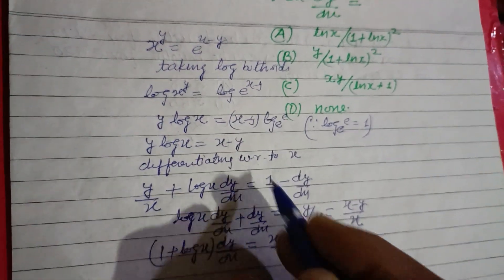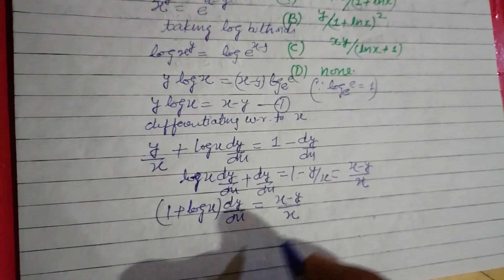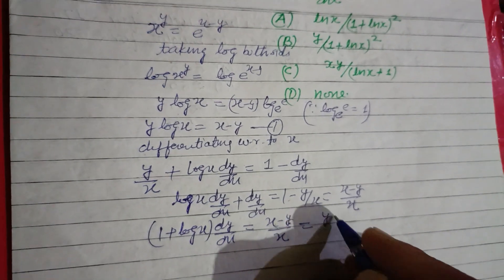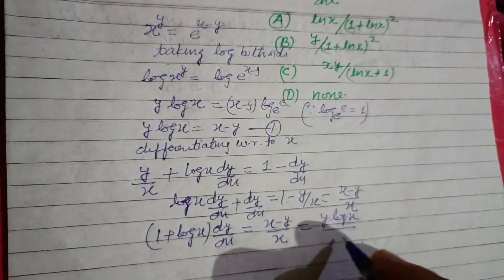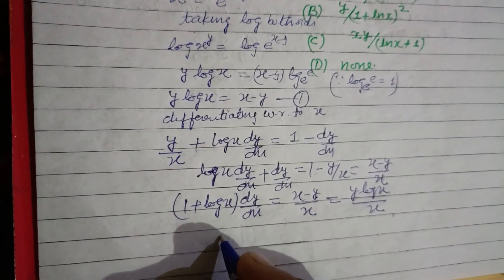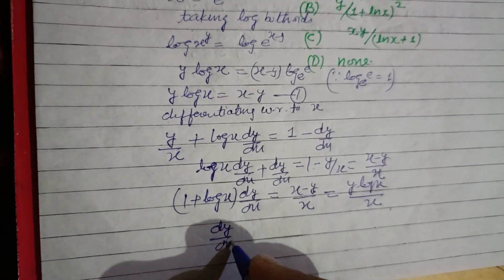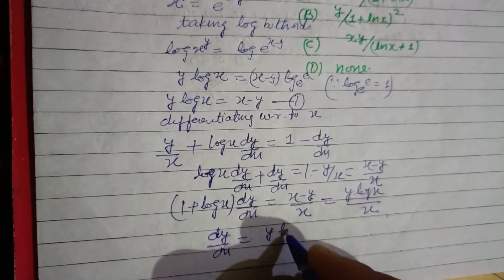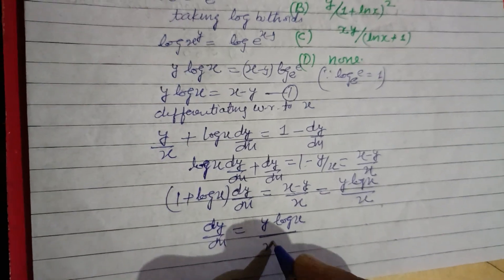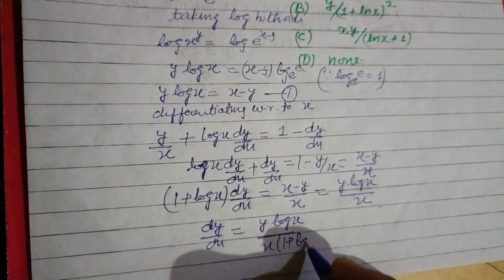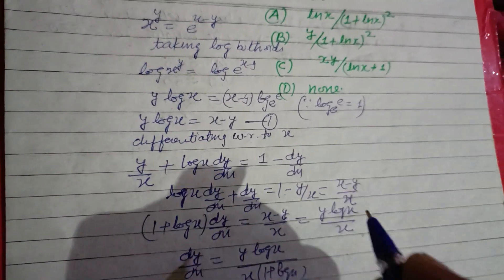dy by dx: we put x minus y from the first equation, which is y log x over x. Okay, and dy by dx equals y log x over x times 1 plus log x. Now we put the value of y.